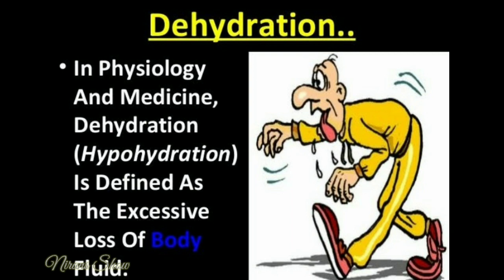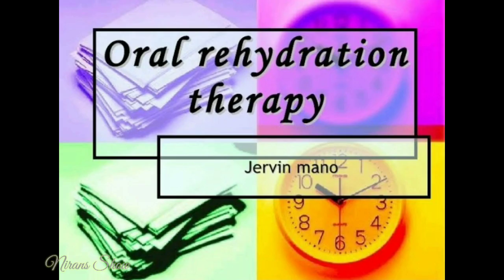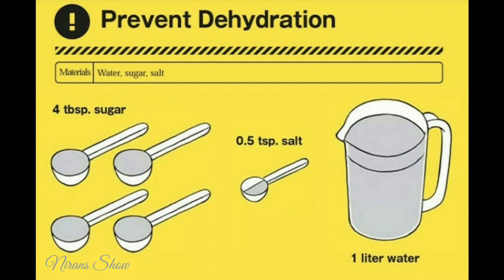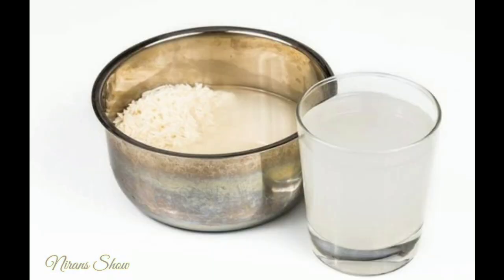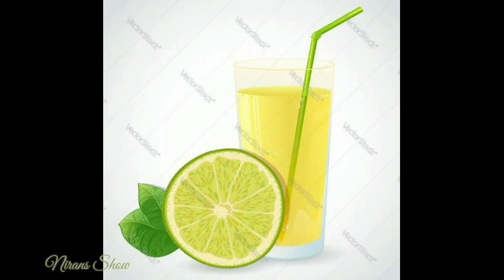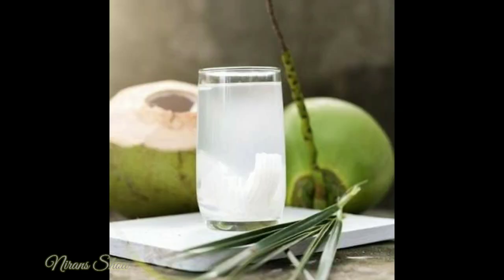When diseases like dysentery occur, the water content of the body is lost to a large extent. In order to bring back the lost water to the body, rehydration therapy should be carried out. ORS, salt rice water, lime juice with salt and sugar, salted buttermilk, and tender coconut water are all rehydration solutions — any of these should be given to drink.